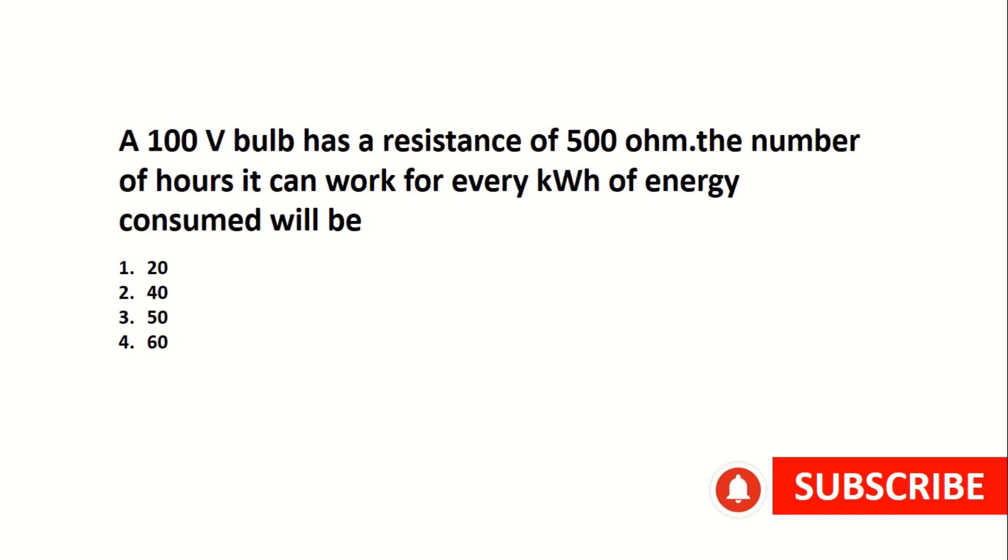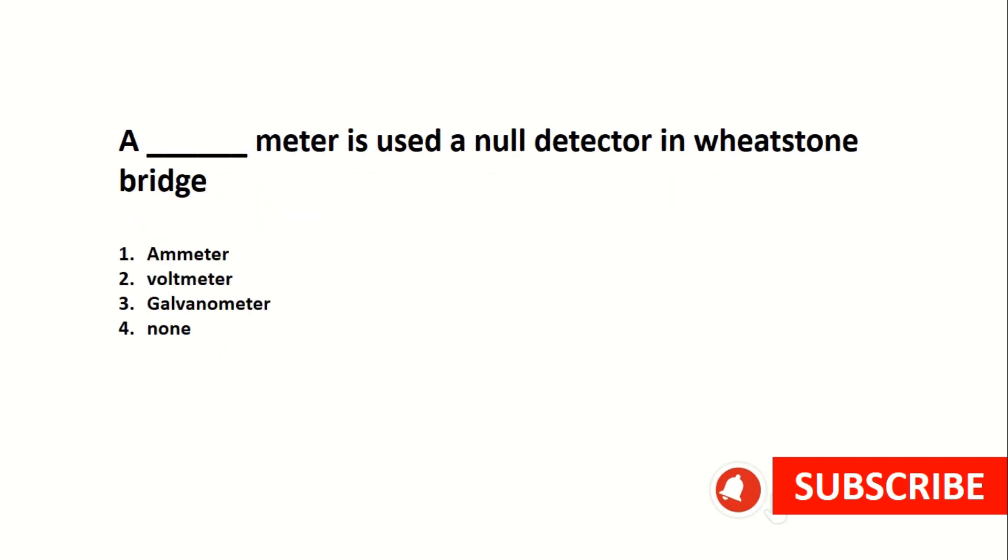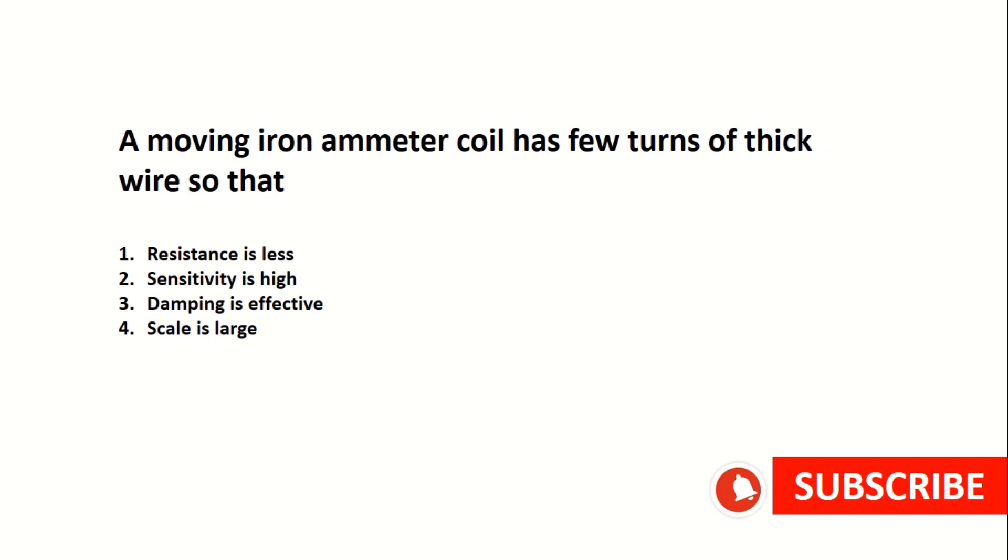The number of hours it can work for every kilowatt hour of energy consumed will be 50. A galvanometer is used as a null detector in Wheatstone bridge. A moving iron meter coil has few turns of thick wire so that resistance is less.